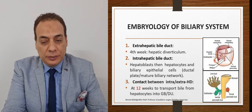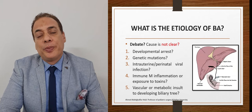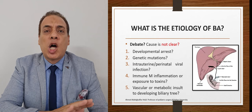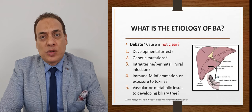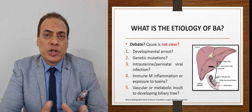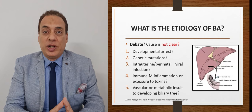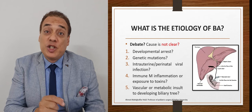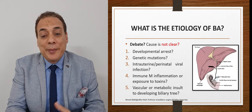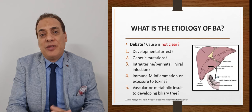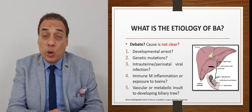What is the etiology for biliary atresia? Why is a baby born with an obliterated biliary system? Unfortunately, the etiology is unknown. However, there are multiple theories trying to explain the pathology: congenital anomaly, genetic mutation, intra-uterine or perinatal viral infection, immune-mediated inflammation, exposure to toxins, or vascular/metabolic insult to the developing biliary tree.